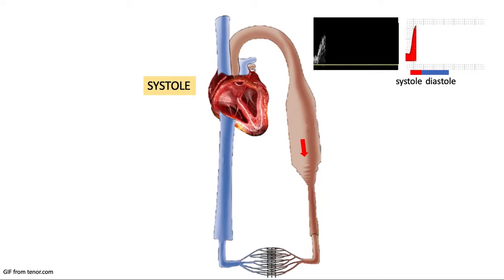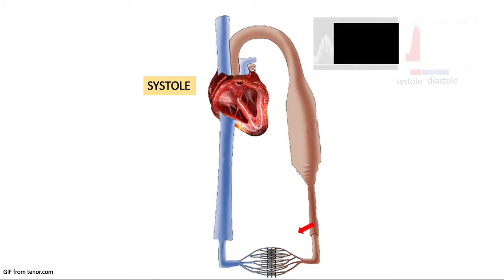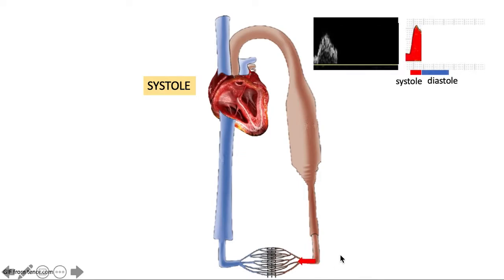During systole, we see a peak here that we know as peak systolic velocity. During the later part of systole here, where there is decreased volume, there will be a decreased pressure.